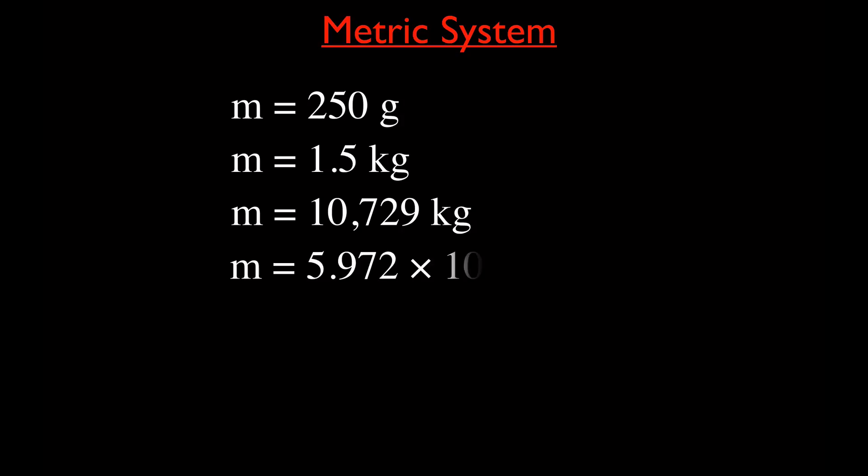Now, when we talk about the metric system, just some quick examples. I mean, the way we write things down, we could say the mass is 200 grams. Or you could say the mass is 1.5 kilograms. You can also say that the mass is 10,729 kilograms. So we write these different ways. Now, when we have something really large, we use scientific notation, which we'll talk about in the next video. This is actually the mass of the Earth, 5.972 times 10 to the 24 kilograms.